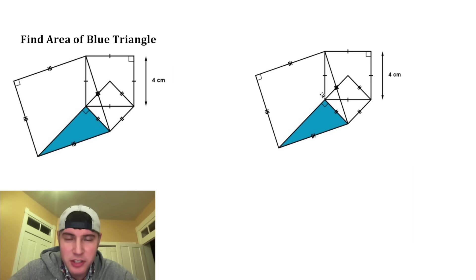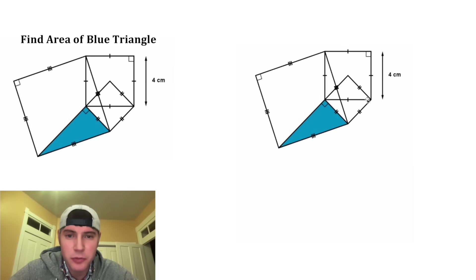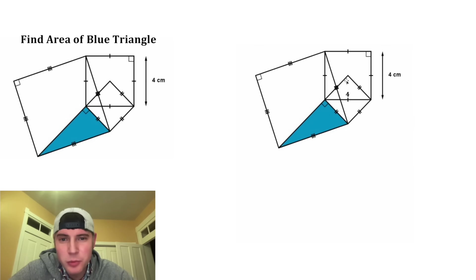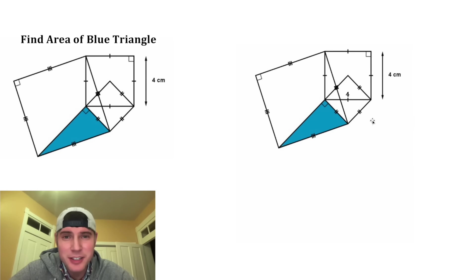First, let's look at this square right here. This side is equal to four, so this side right here is also equal to four. Next, I wanna look at this rhombus right here. Let's verify that it's a square.